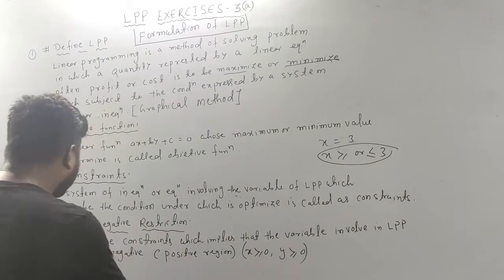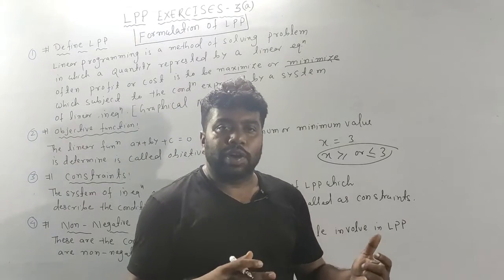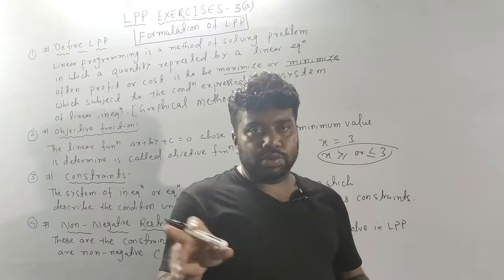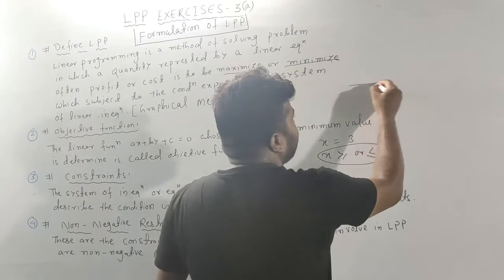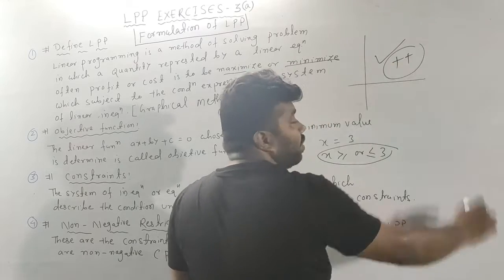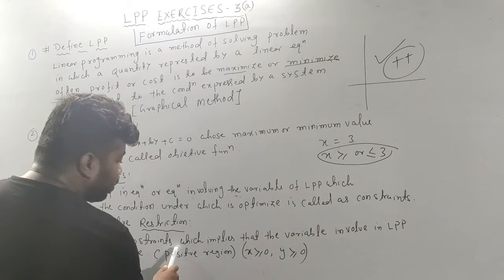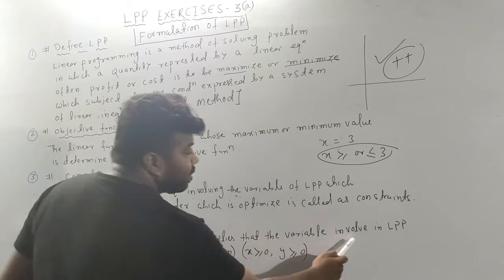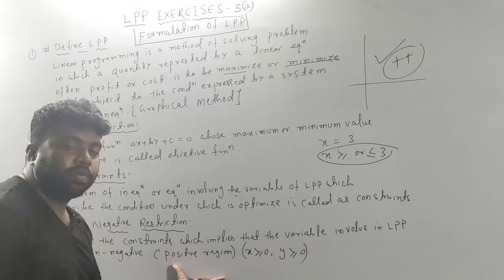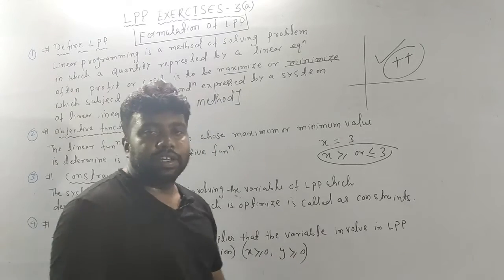There is also a non-negative restriction. Non-negative means not negative, i.e., positive. So in LPP, the variables are on the positive side of the graph. The non-negative restriction means the variables involved in LPP are non-negative: x ≥ 0 and y ≥ 0.